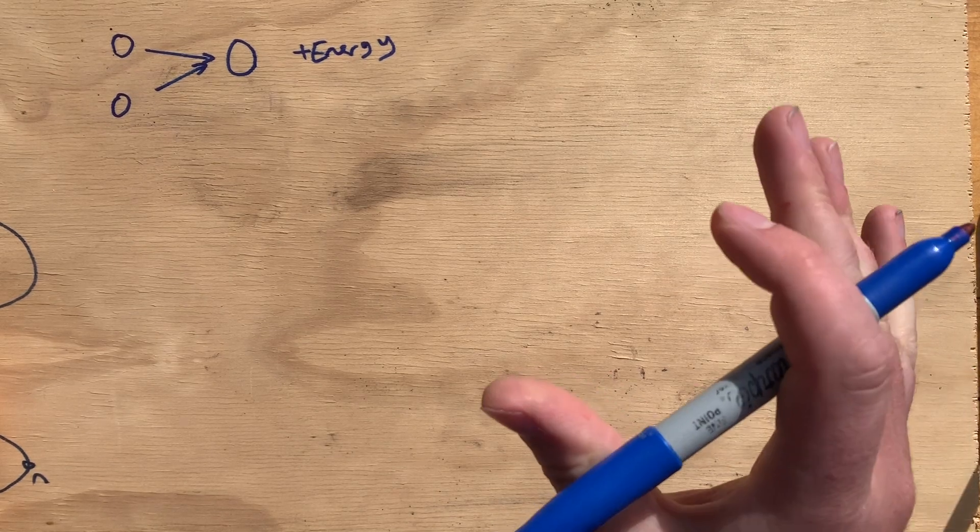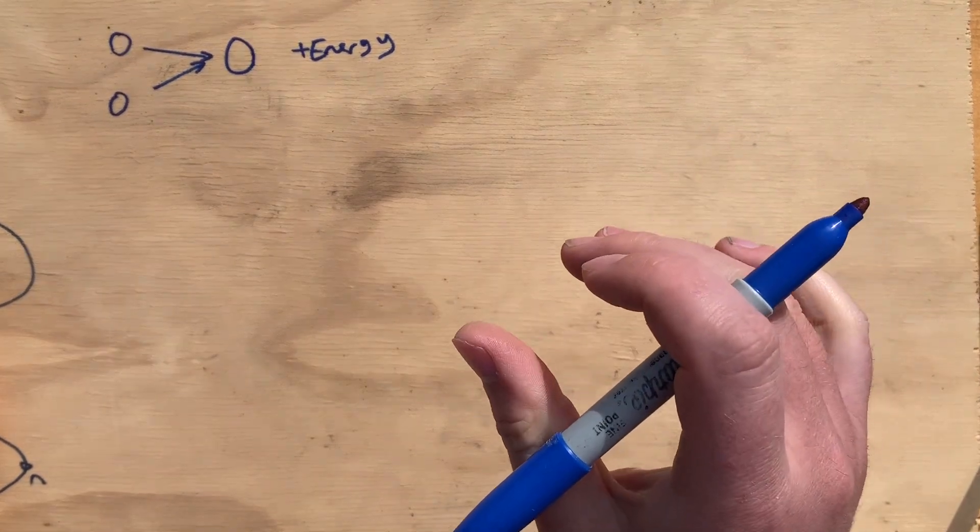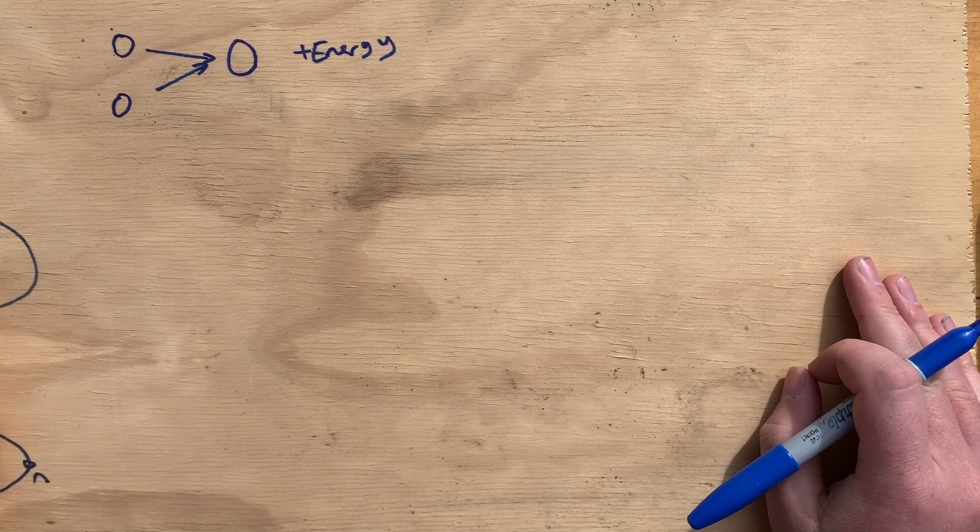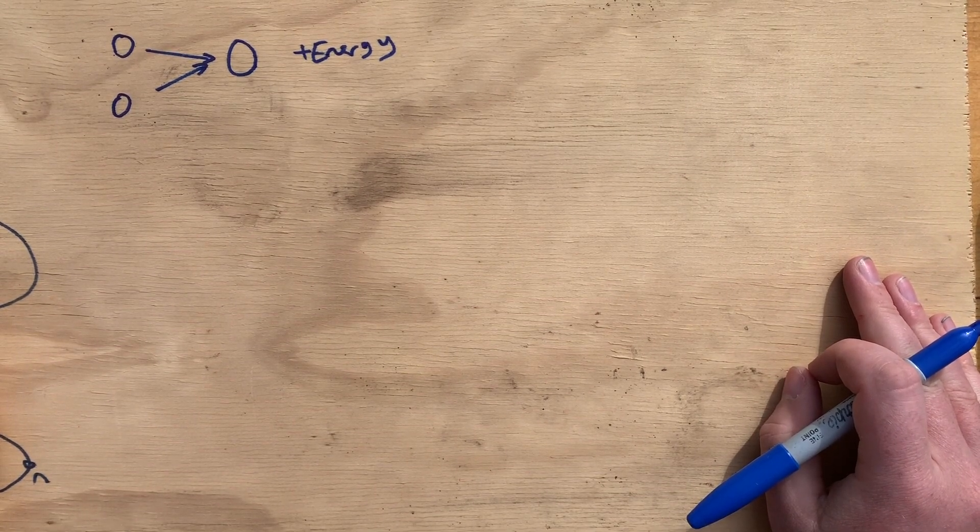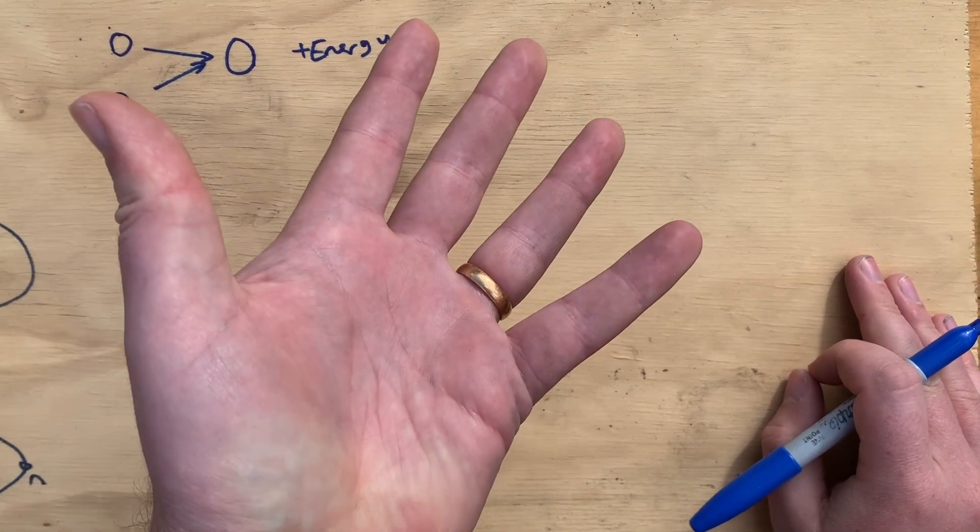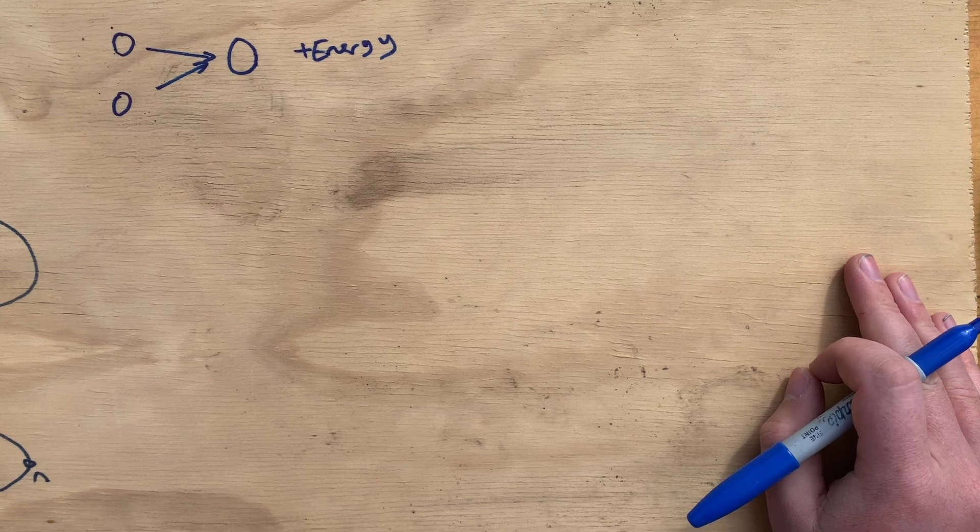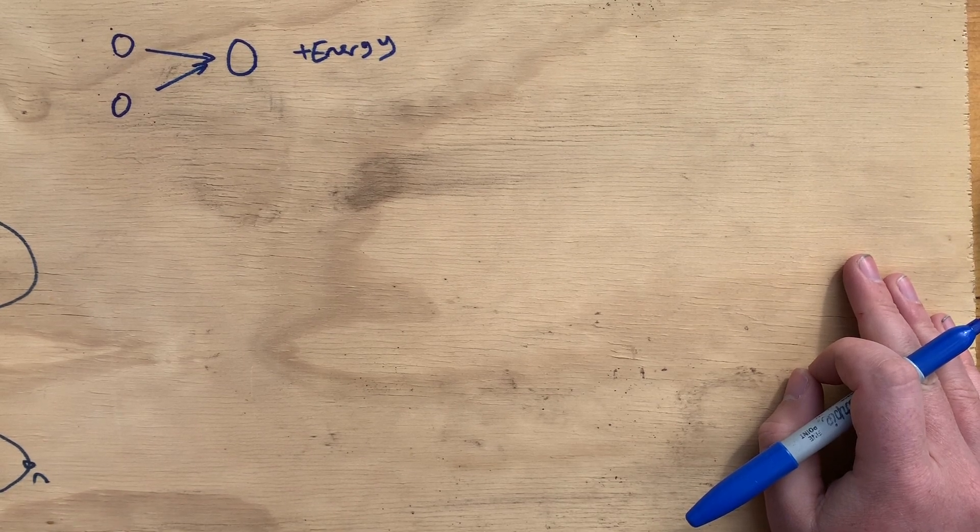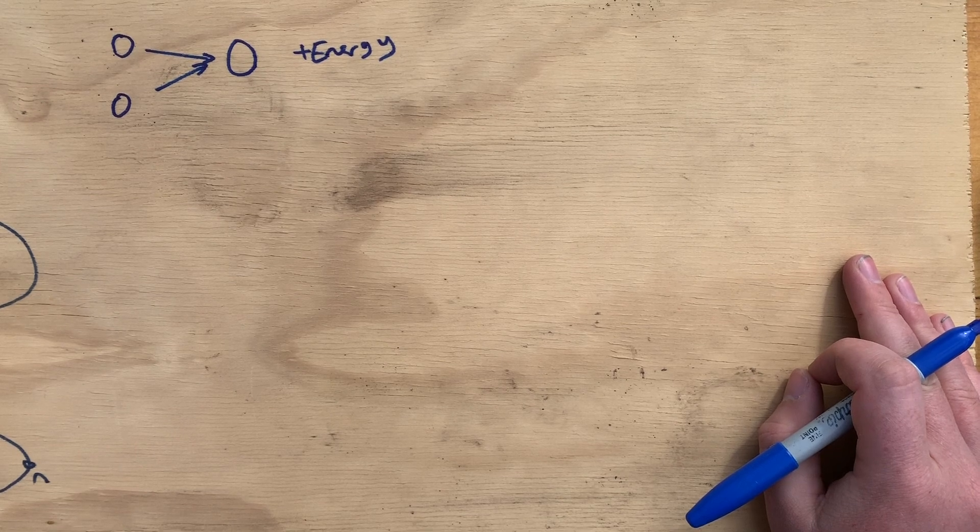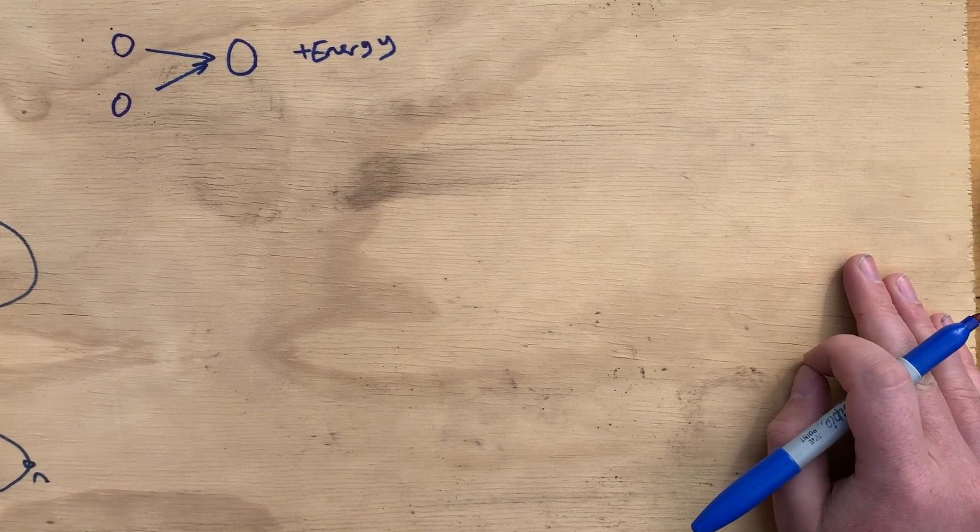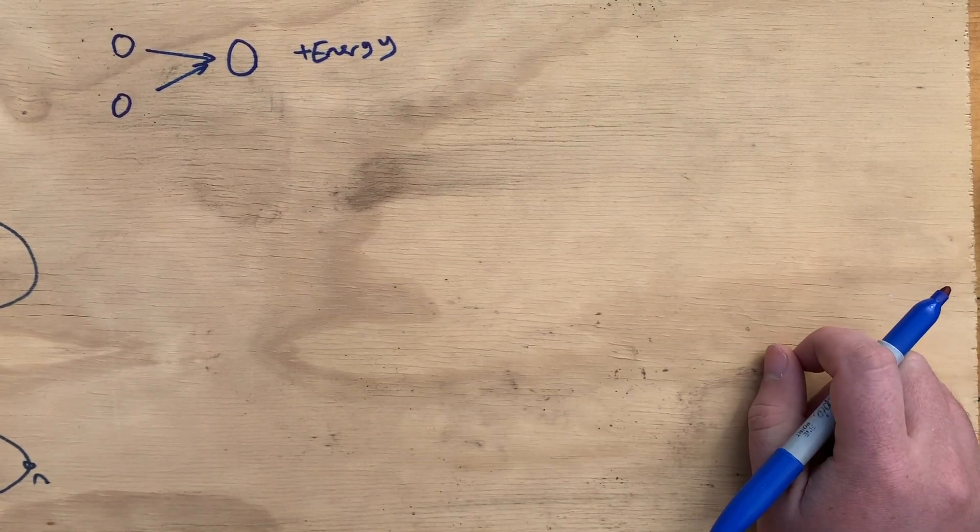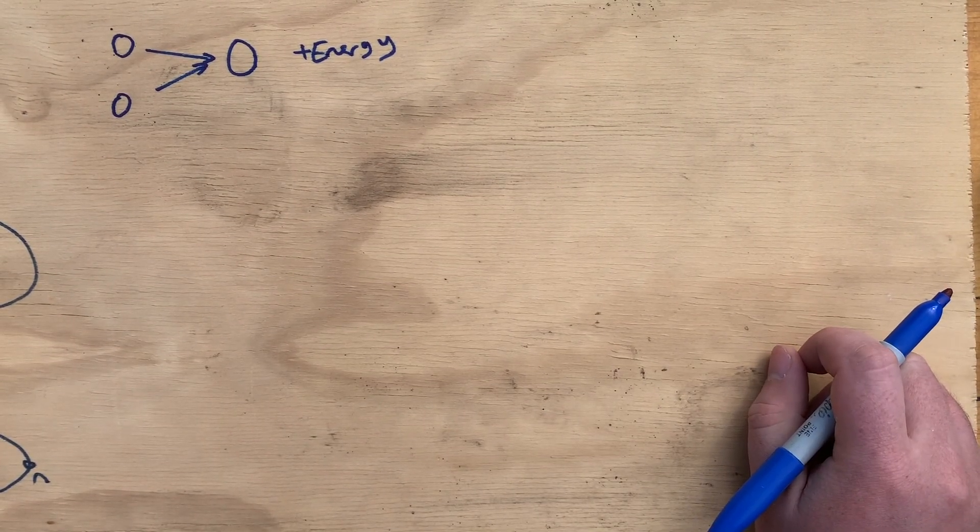And in the supernova, that's when nuclear fission starts to happen. So like my wedding ring's got gold in it. So those gold atoms were formed in a supernova, because I know that gold is a heavier nucleus than iron. So it has to have been formed in a nuclear fission event in a supernova.